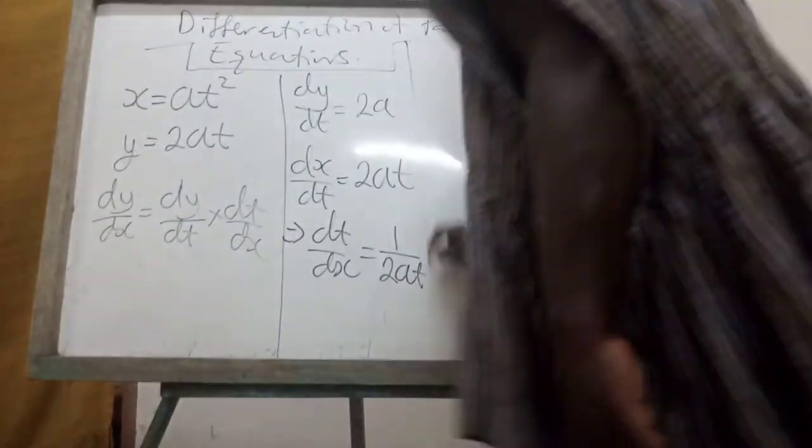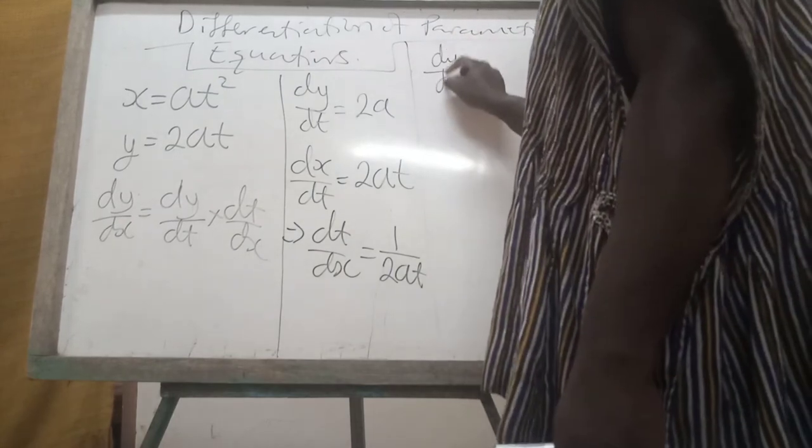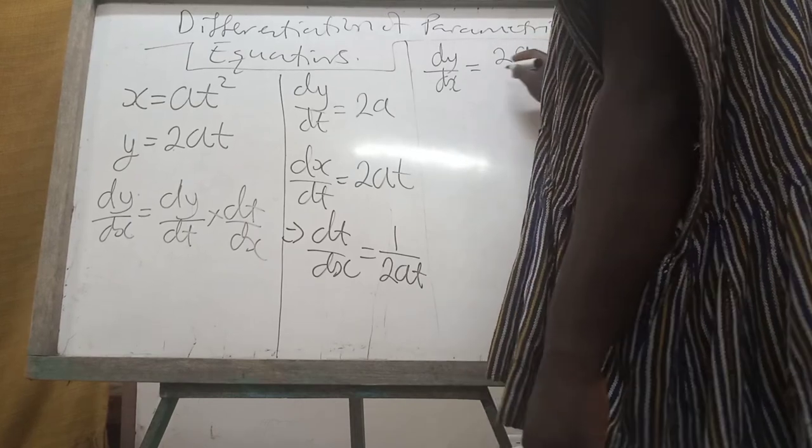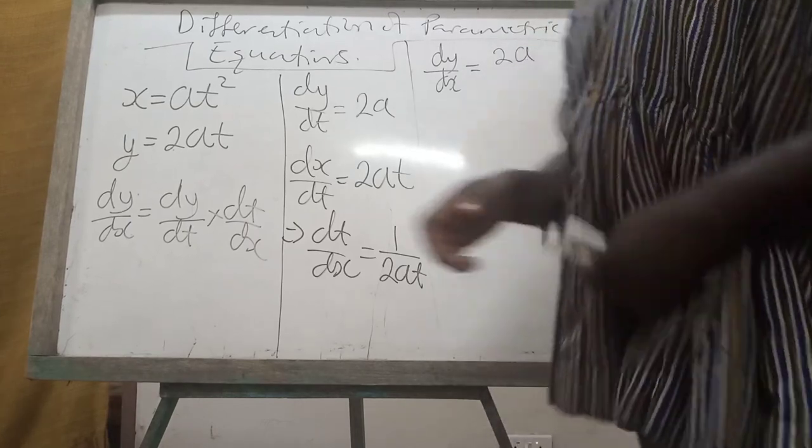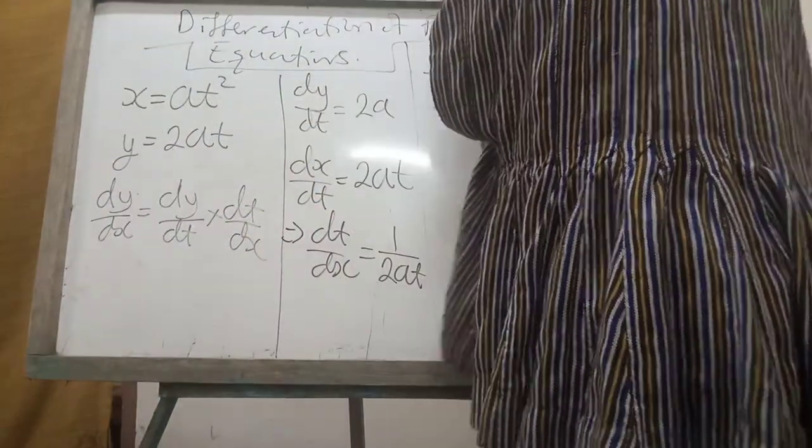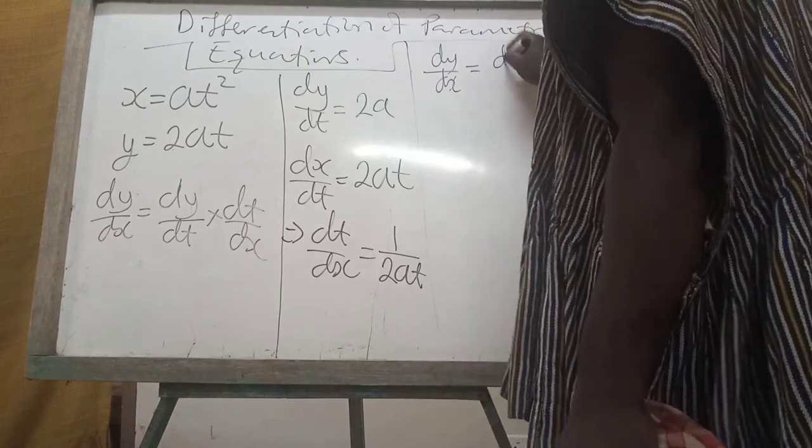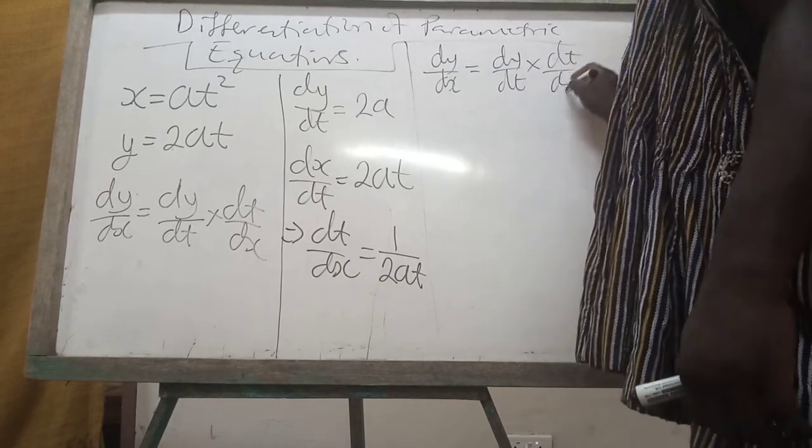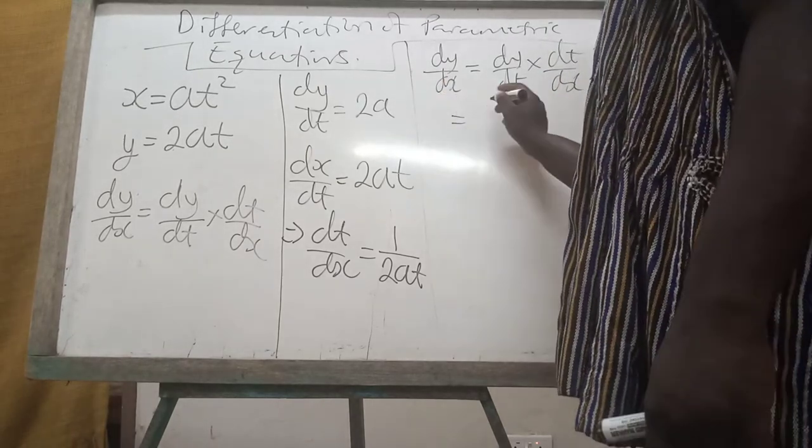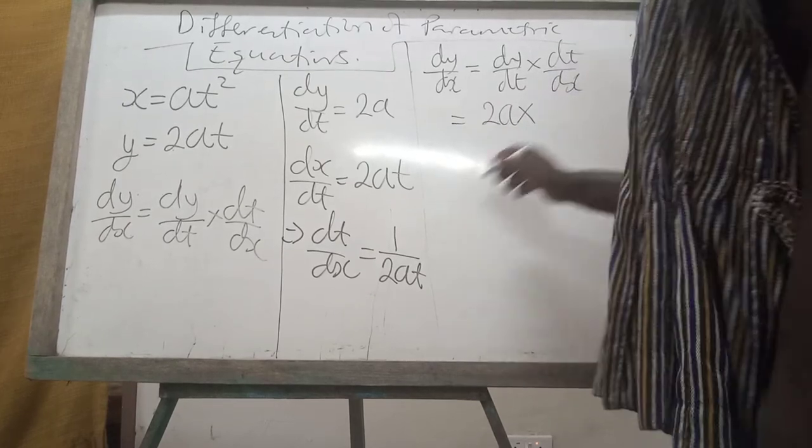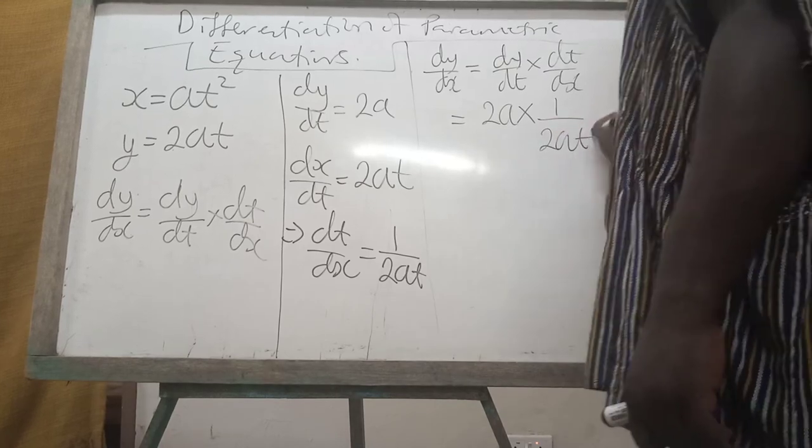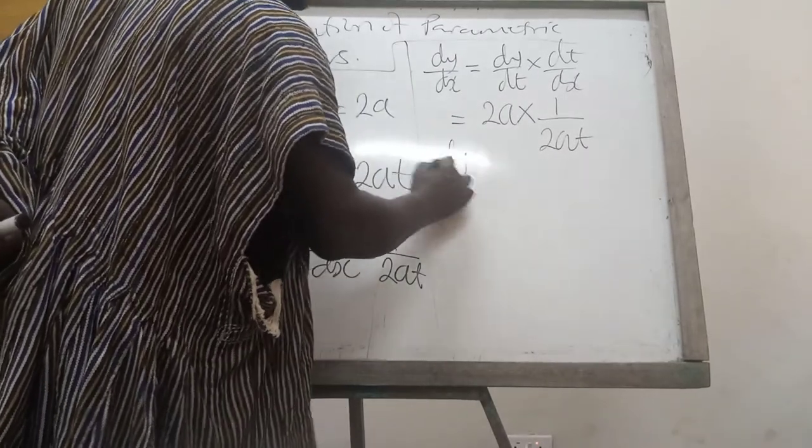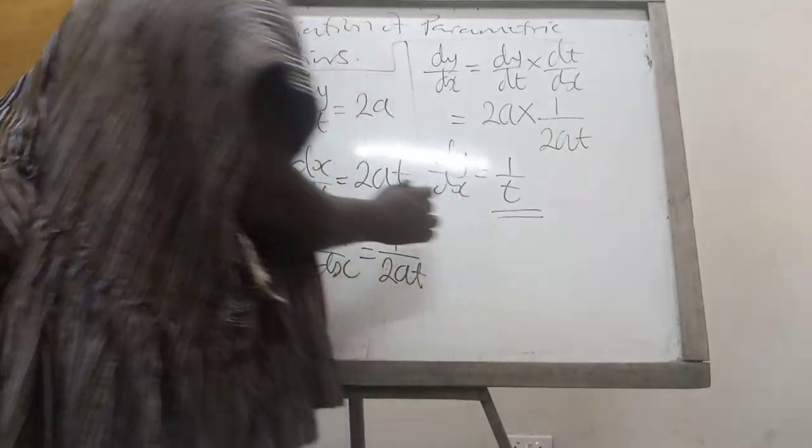If that is the case, then dy/dx is simply dy/dt which we have as 2a times... I need to write a formula for you to get the understanding so that I don't jump any step. dy/dx is dy/dt times dt/dx which we can simply write as dy/dt is 2a times dt/dx which is 1 over 2at. So you see, 2a and 2a will be cancelled out and we are therefore going to get dy/dx to be equal to 1 over t. This is the gradient function or the slope.